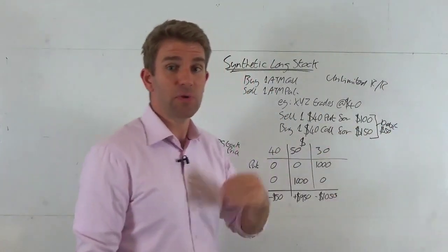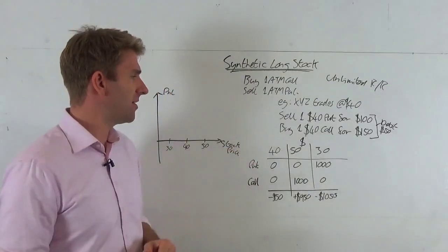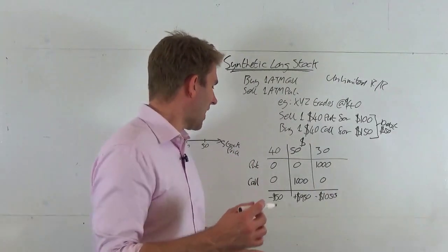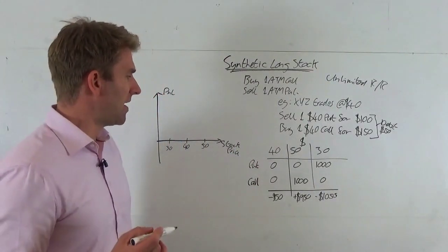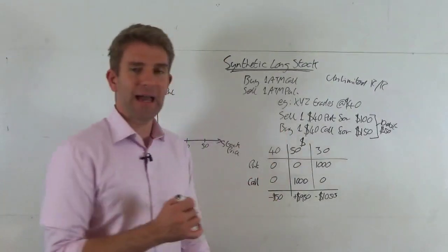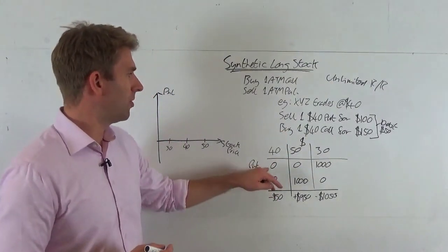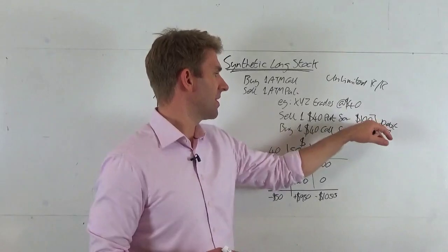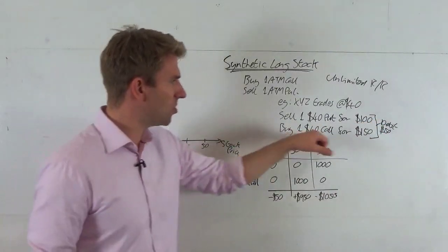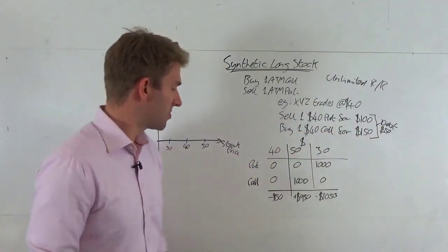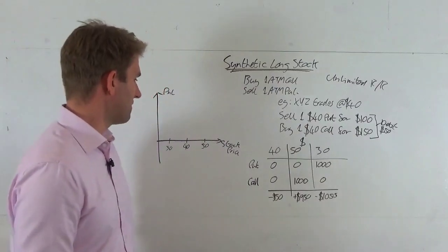So what happens if we get to expiry and we're still at $40? Well, the put expires worthless so we get the full $150 back, but so does the call, so we lose $150 on that. The net on that is minus $50.